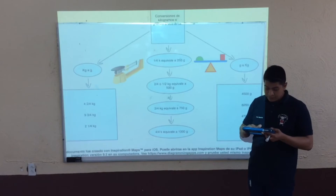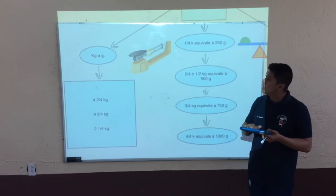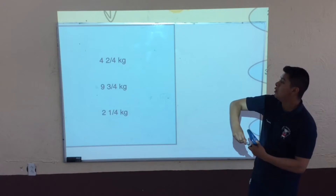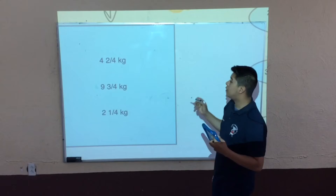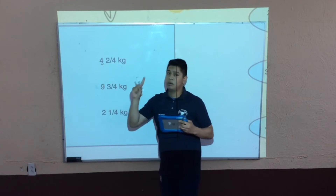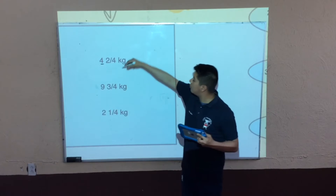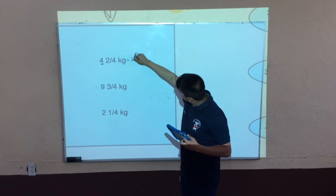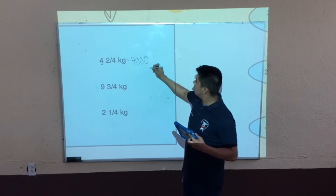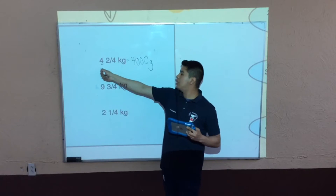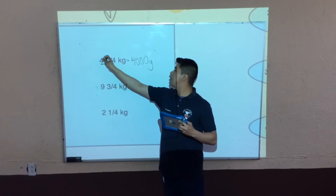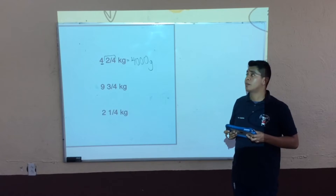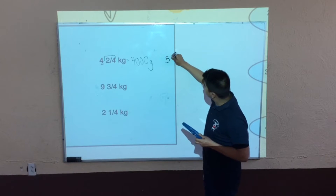Nos vamos primero a las conversiones de kilogramo a gramo. Tenemos aquí 4 enteros con 2 cuartos de kilogramo. Recordamos que 1 kilogramo equivale a 1000 gramos, entonces aquí tenemos 4 kilos, que equivale a 4000 gramos. Ya tenemos esta parte del entero. Ahora nos vamos con la fracción: ¿cuánto equivale 2 cuartos de kilogramo? Equivale a 500 gramos.